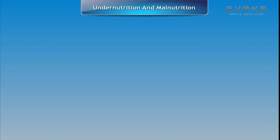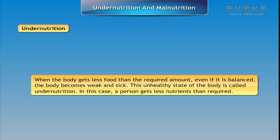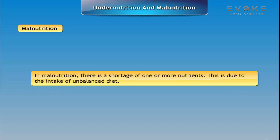Under nutrition occurs when the body gets less food than the required amount, even if it is balanced. The body becomes weak and sick — this unhealthy state is called under nutrition, where a person gets less nutrients than required. In malnutrition, there is a shortage of one or more specific nutrients.